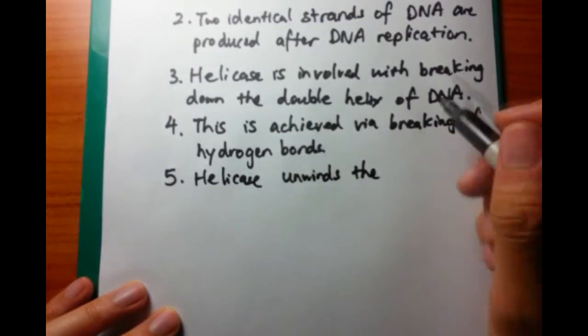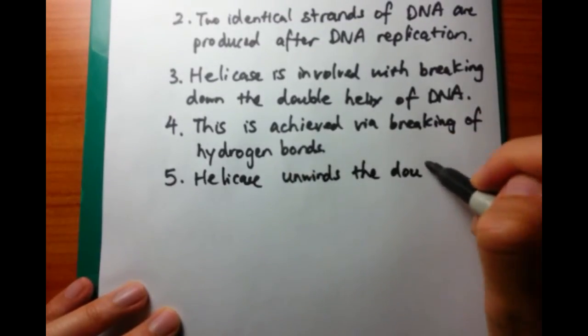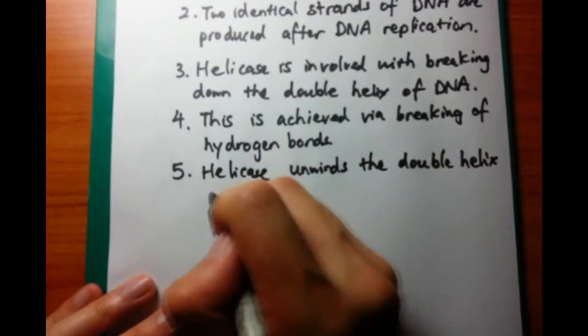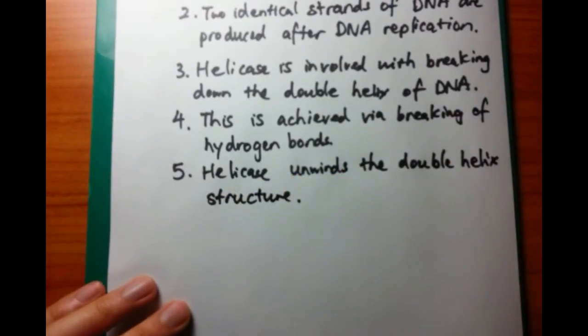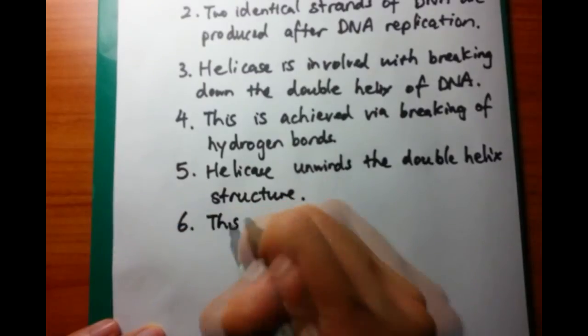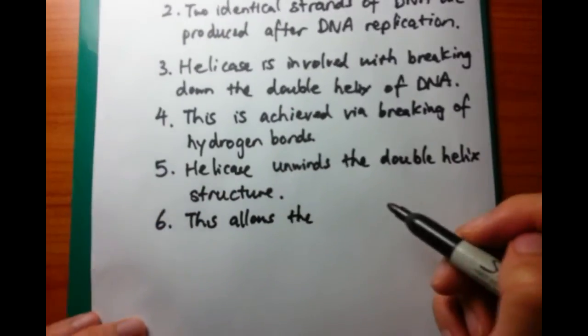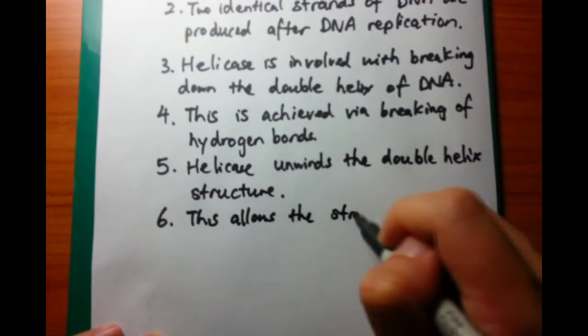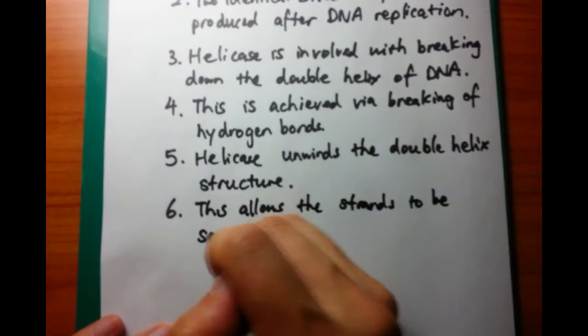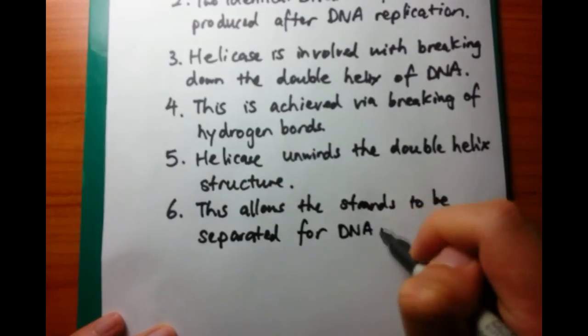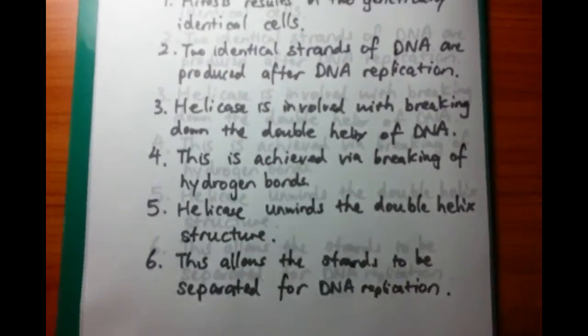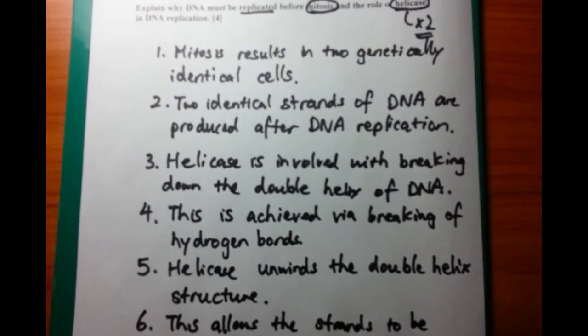So after you've broken down the double helix structure, it also unwinds the double helix structure. And this allows the strands to be separated for DNA replication. And what this means is that initially you have a double-stranded DNA molecule, and then you now have two single-stranded molecules after the separation. And that is what is required for mitosis.